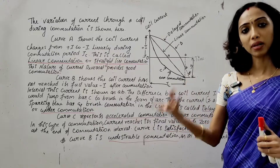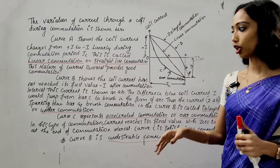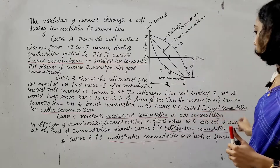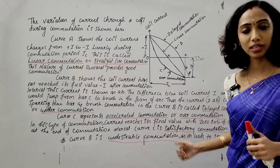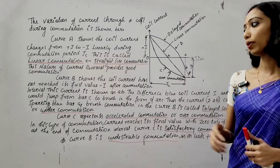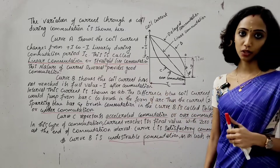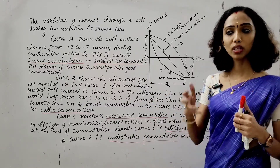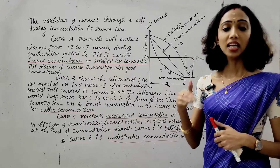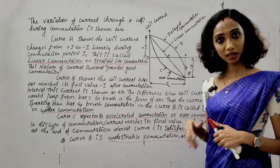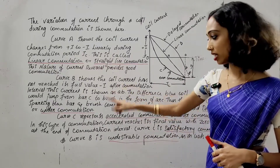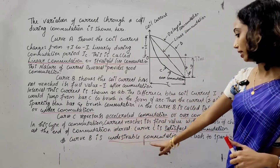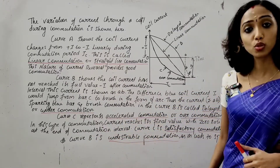Therefore, the commutation in curve B is called delayed commutation or under commutation. Curve B represents undesirable commutation as it leads to sparking at the brushes.